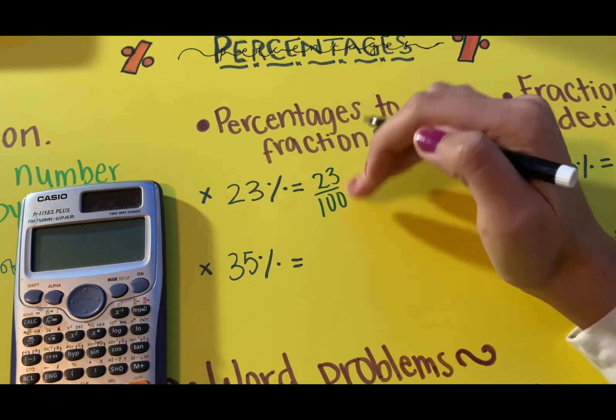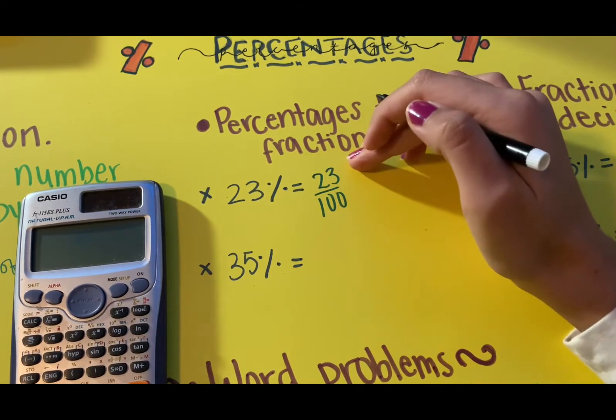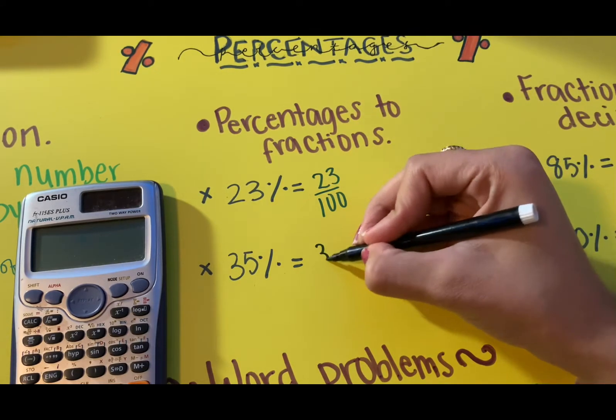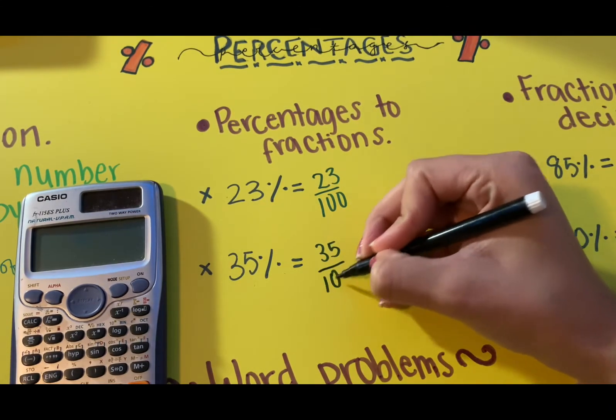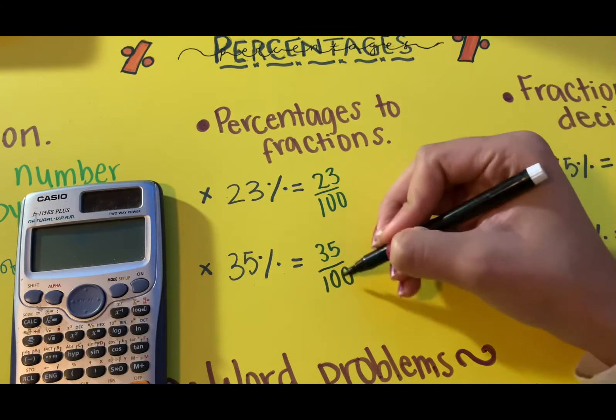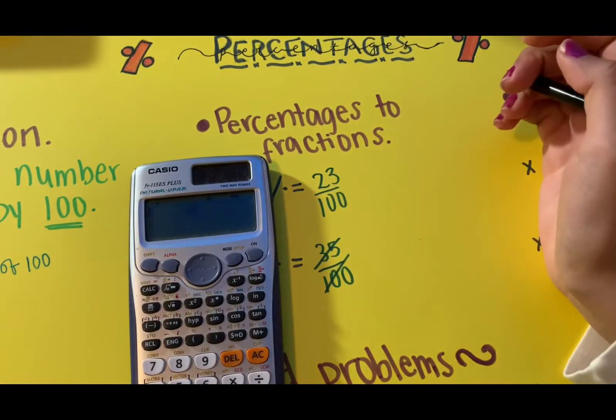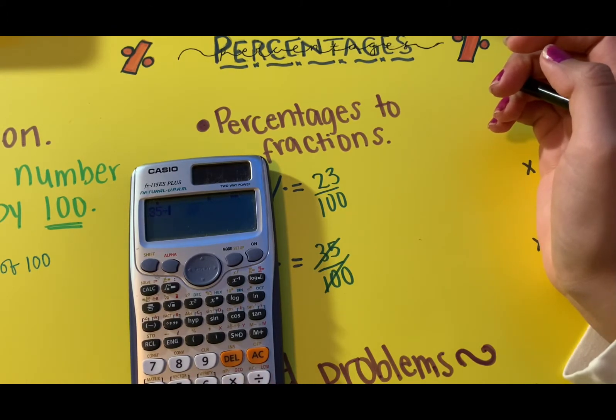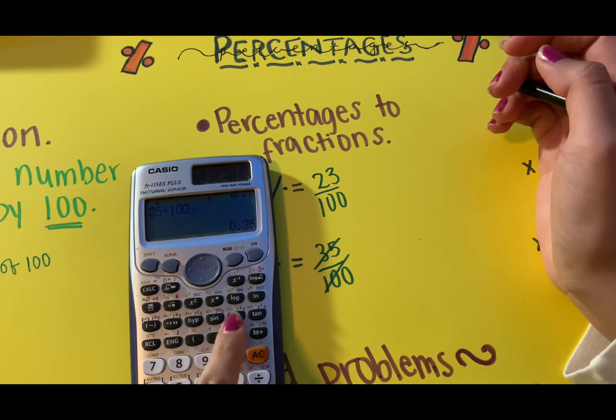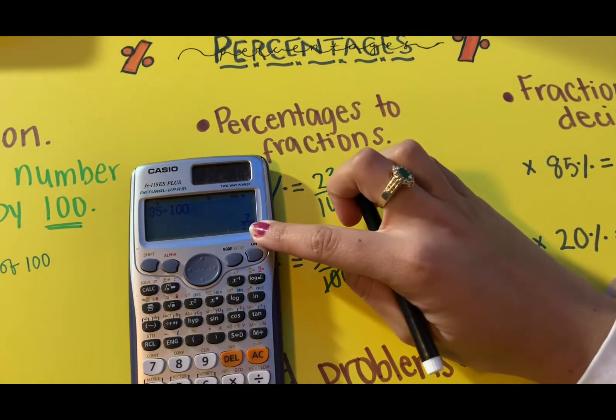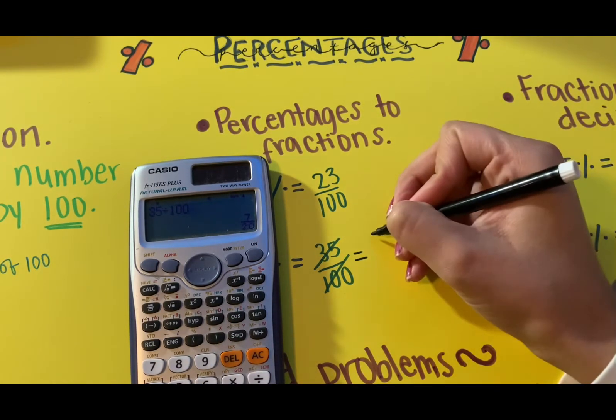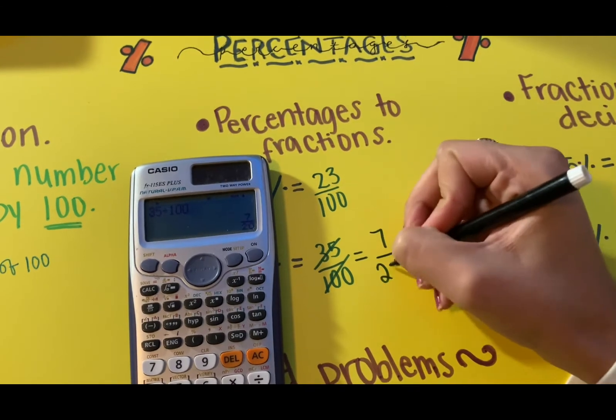For the next one, 35 over 100, there's something in common so you simplify it. You put it in the calculator. You're going to have a calculator in the HESI exam. So 35 over 100, you put this and it's gonna be simplified as 7 over 20. That's it.